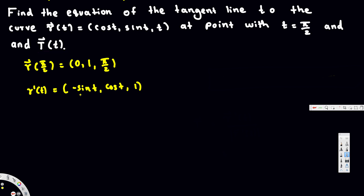Plugging in t = 5π/2: negative sin(5π/2) = -1, cos(5π/2) = 0, and 1. So our tangent vector is ⟨-1, 0, 1⟩.